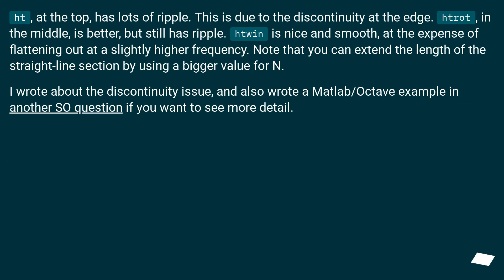ht, at the top, has lots of ripple. This is due to the discontinuity at the edge. htrot, in the middle, is better, but still has ripple. htwin is nice and smooth, at the expense of flattening out at a slightly higher frequency. Note that you can extend the length of the straight-line section by using a bigger value for N. I wrote about the discontinuity issue, and also wrote a MATLAB/Octave example in another SO question if you want to see more detail.